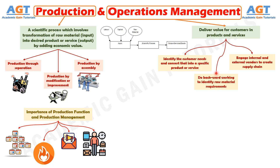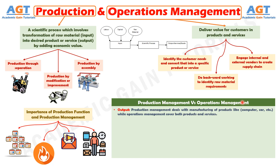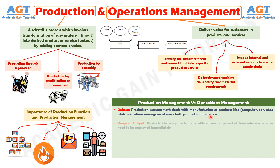A high-level comparison which distinguishes production and operations management can be done on the following characteristics. Number 1, based on output: production management deals with manufacturing of products like computers, cars, etc., while operations management covers both products and services. Number 2, based on usage of output: products like computers or cars are utilized over a period of time, whereas services need to be consumed immediately.